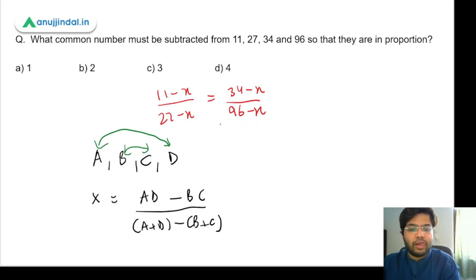Let's do it with this question. So in this question it will be (11 into 96) minus (27 into 34) upon (11 plus 96) minus (27 plus 34). Let's calculate this. 11 into 96 comes out to be 1056.